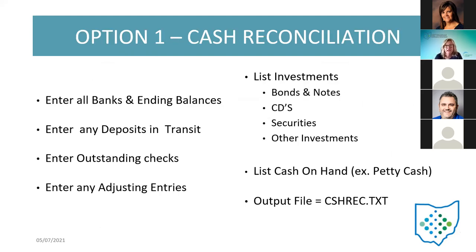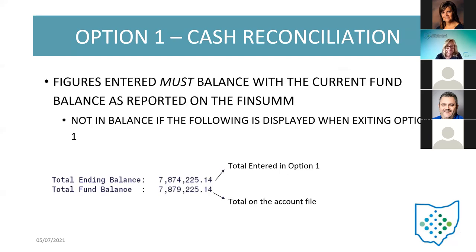Option one is cash rec — they've probably already done this entering in your bank balances, deposits in transit, any outstanding check amounts and any adjusting entries. It does produce a cash rec.txt file that gets included on the monthly CD. At the end of the run, it shows an ending balance and a fund balance — the ending balance is the amount they entered in the option, and the fund balance is automatically calculated from the system from the account file. Those should match. If they don't match, they have to figure out what happened — usually it's a mistyped or transposed number when entering the cash rec information. The federal assistance summary is marked to show whether their total federal expenditures were more or less than $750,000 — it's just marking that and having them put in the year and information.